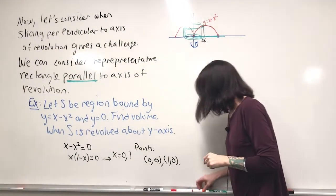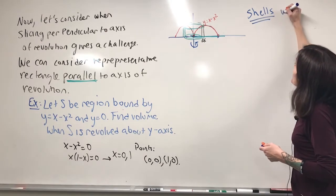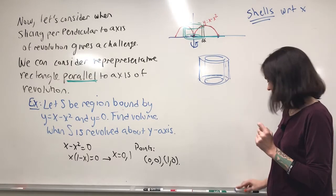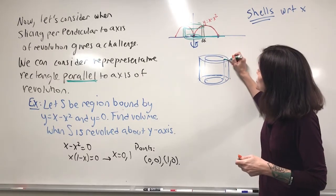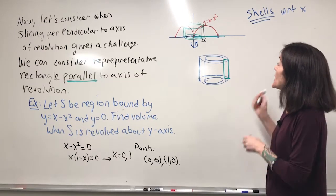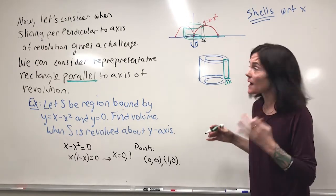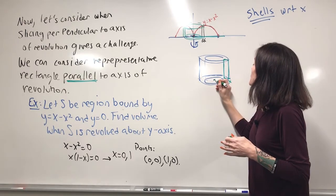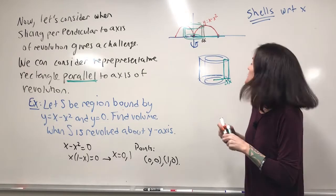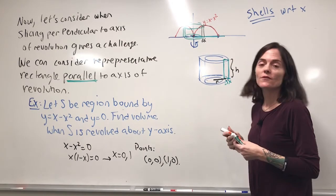So here is the shell, and we are integrating with respect to x. Our representative rectangle is right here with thickness Δx, and it goes all the way around. I can pick a point xᵢ in the interval — it goes out to here and we have a radius and a height. Now, how do we find the volume of this?